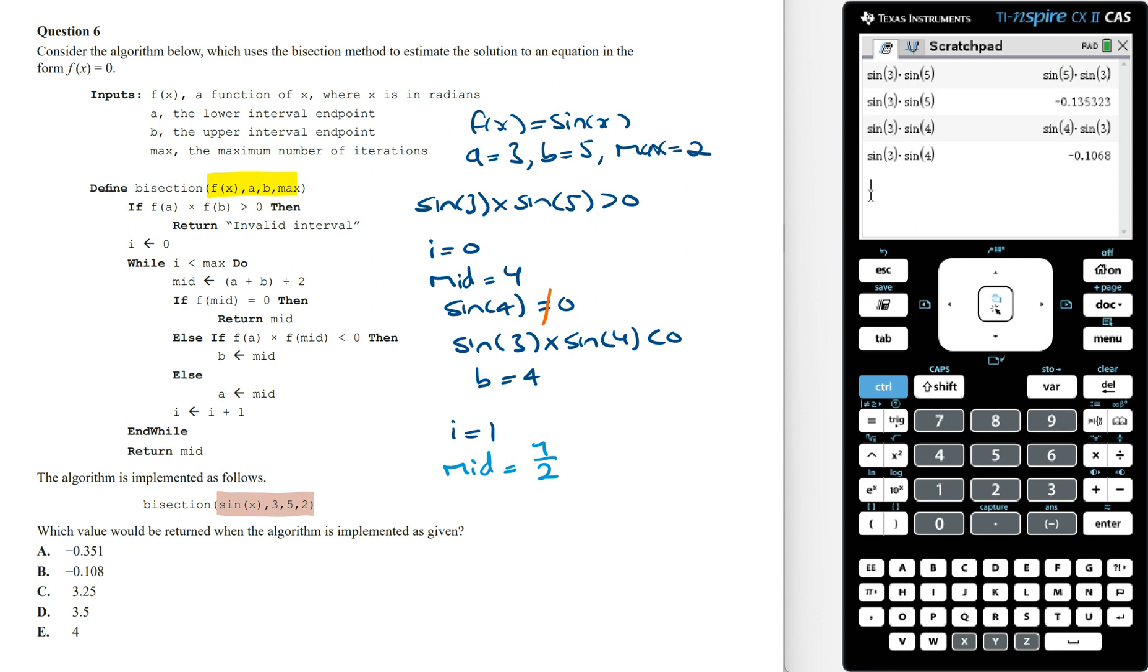We've got else if f of a times f of mid is less than 0, then the value of b is going to equal mid. f of a is going to be sin of 3, and then times f of mid is going to be sin of 7 on 2, and we want to see if this is less than 0.